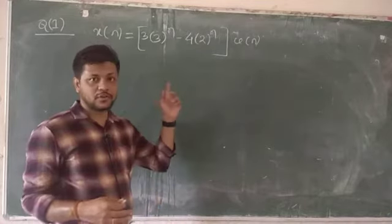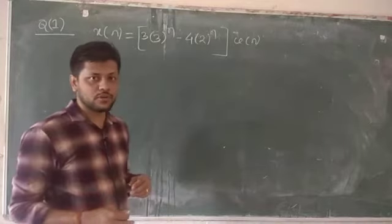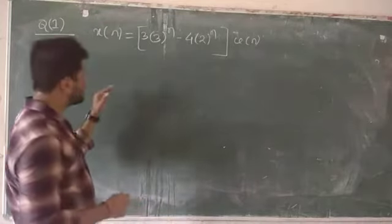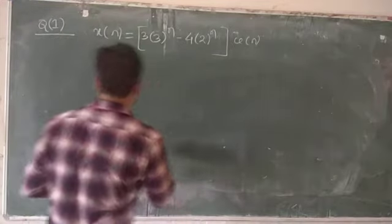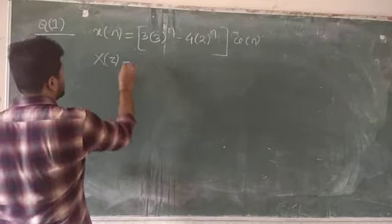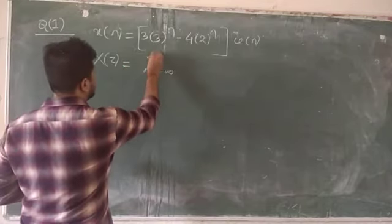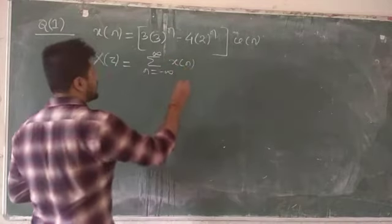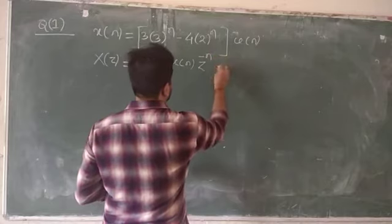For example, if I want to calculate x(−n), then u(−1) = 0, so the whole term becomes 0. Now we have to find the Z-transform. The definition is X(z) = summation from n = −∞ to ∞ of x(n)·z^(−n).